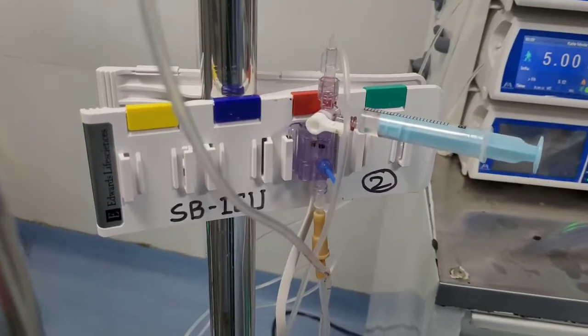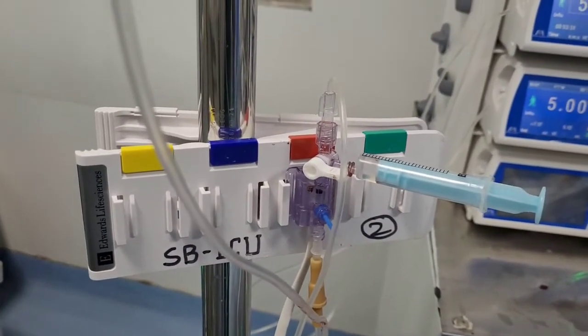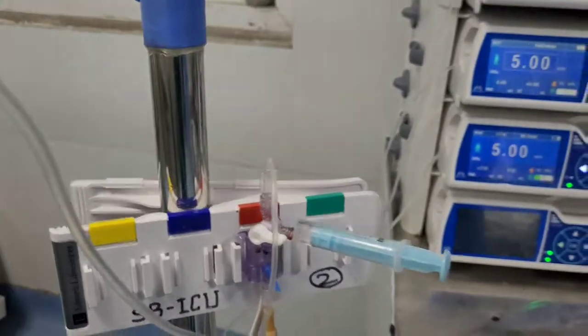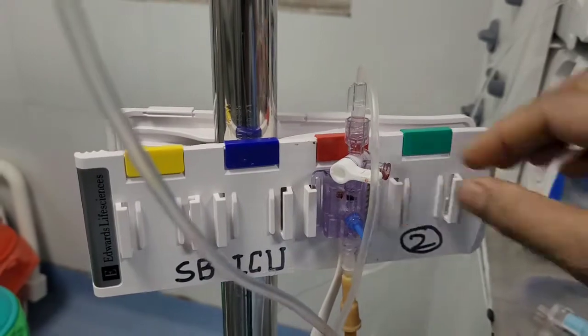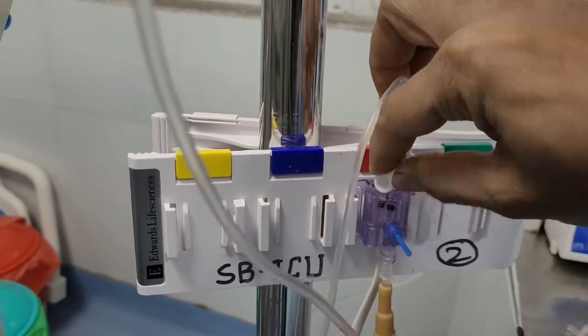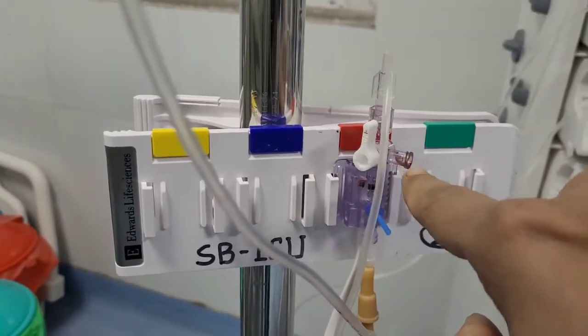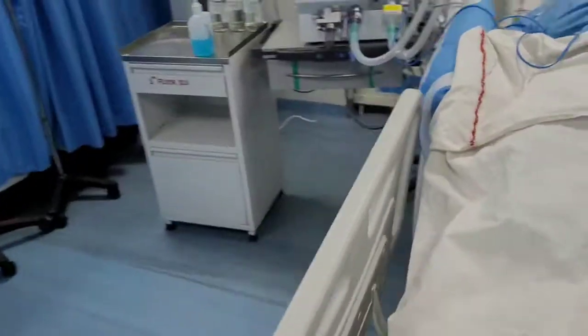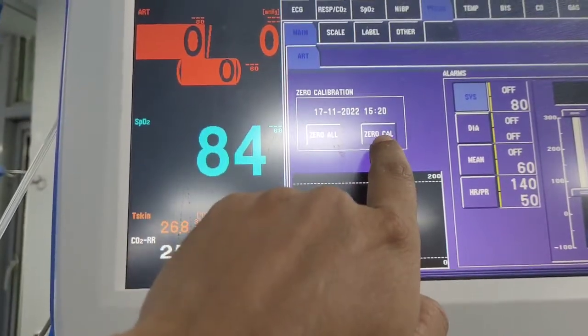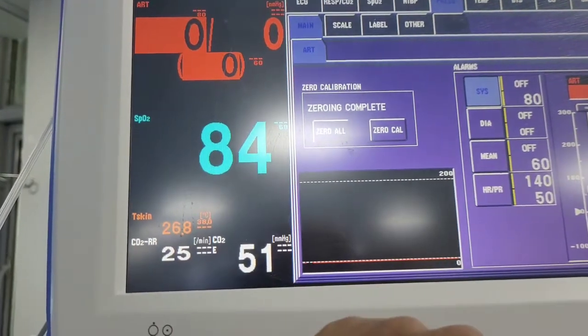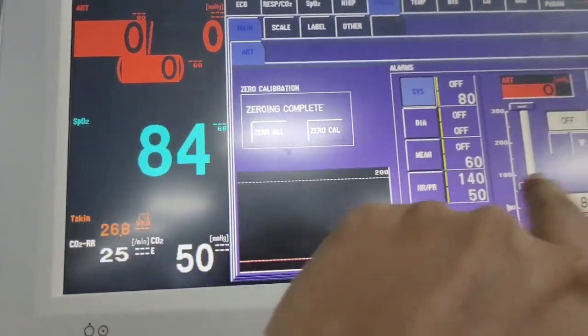Now I will show you how to calibrate and zero this arterial line. For this we have to take out the syringe, turn this upside, and keep this port open. Now we go into the arterial menu and select zero calibration. Zero complete.